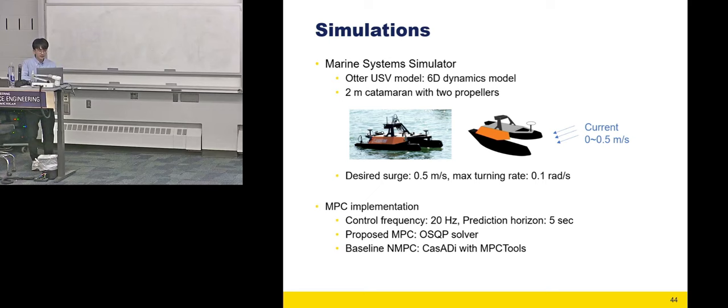To evaluate our proposed algorithm, we utilize the marine system simulator with an Auto USV model, which is designed based on 6DOF motion. This vehicle is a two meter catamaran from a real vehicle. The model is experimentally modeled using the Fossen dynamics model. We conducted trajectory tracking tasks under conditions with ocean currents. We performed rotational and zigzag movements to assess the vehicle's maneuverability. We implemented convex MPC with OSQP solver. For baselines, we developed a nonlinear MPC using the CasADi tool, which is a tool for nonlinear programming optimization. Then we can compare the performance of the proposed Lie group MPC and nonlinear MPC.